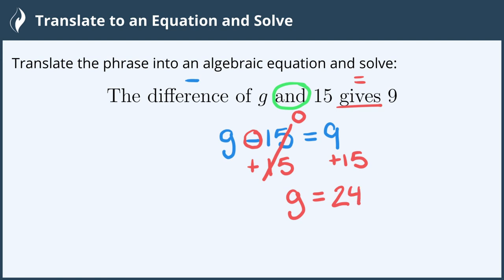We've isolated the g on the left hand side or gotten it all by itself and solved for the right hand side by adding those two together, and we end up with g equals 24 as our solution and now we're all done.